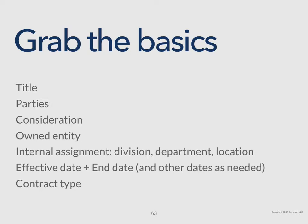If you are part of an organization that has multiple legal entities — and most people work for such companies — it's important to be precise about the legal entity in your corporate family that is contracting in this particular contract, as well as the other party. You need to capture the consideration: what is the exchange of value, what is the subject of the contract? Also, who the owned entity is that you are working on behalf of, the internal assignment of the contract to a division, department, or location, and the effective and end dates or other dates as needed.